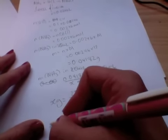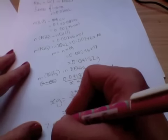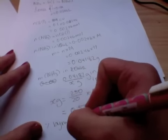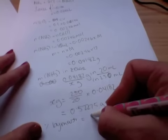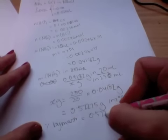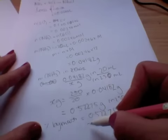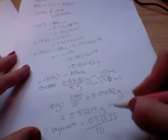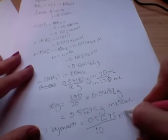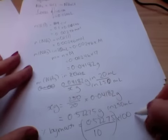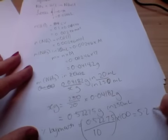So X grams equals 250 divided by 20 times 0.04182 grams equals 0.52275 grams in 250 mL. Now, the question asks for percentage by mass. So percentage by mass equals 0.52275 divided by the original mass of the cleaner, which is 10 grams, times 100 will give you a percentage equals 5.2%.